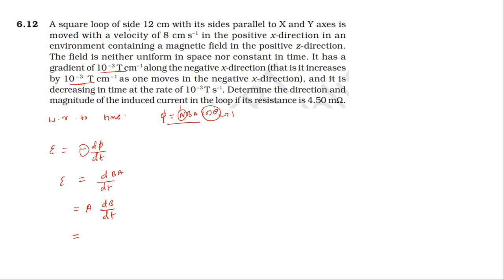The square loop has side 12 centimeters, so area equals side squared equals 12 cm squared, which is 12 into 10 power minus 2, whole squared, equals 144 into 10 power minus 4 meters squared. Substituting: induced EMF equals 144 into 10 power minus 4 into dB by dt, where dB by dt is 10 power minus 3 tesla per second.